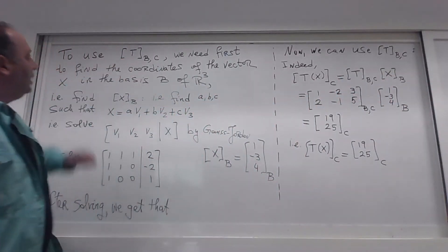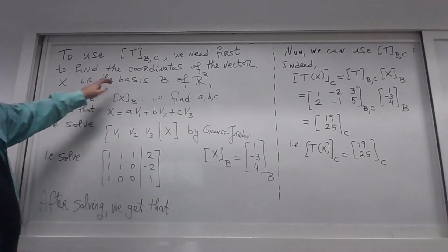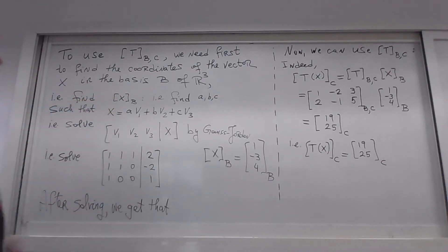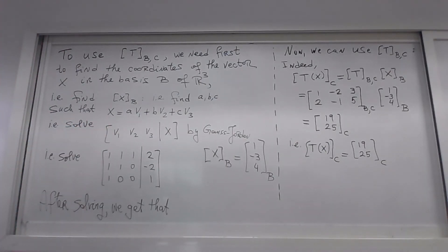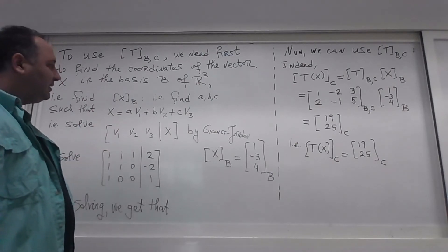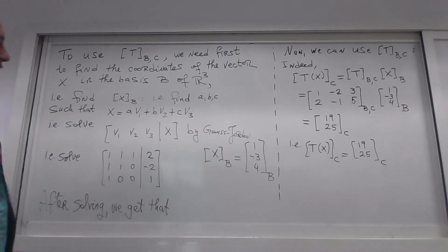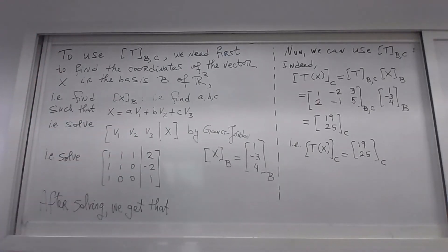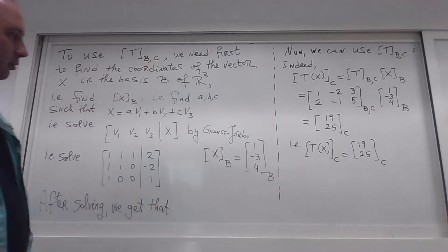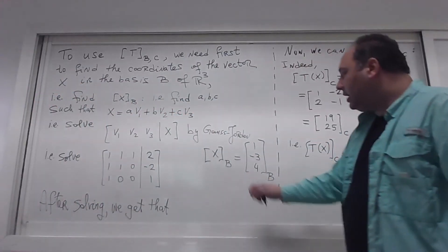To use the representation matrix we first need the coordinates of x in basis B. We set up the linear combination and solve the corresponding linear system using Gauss-Jordan: place v1, v2, v3 as columns alongside x and row-reduce. After solving, we obtain the coordinates of x in basis B.